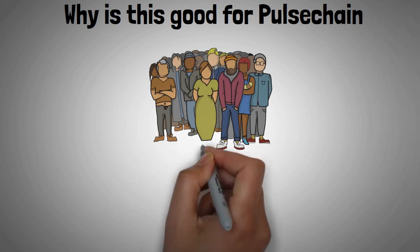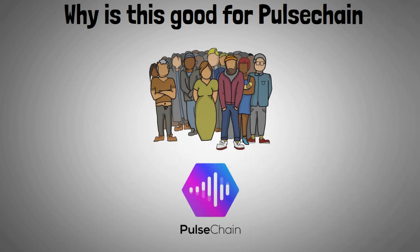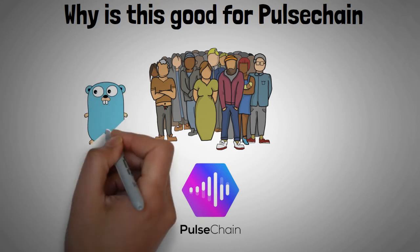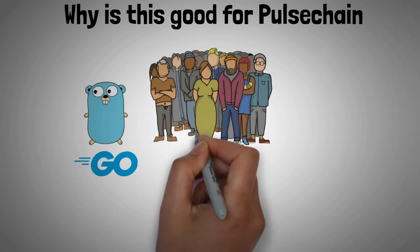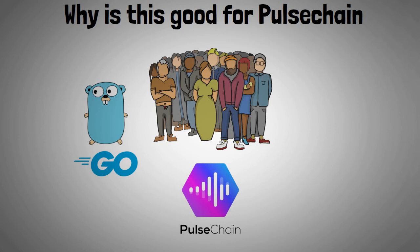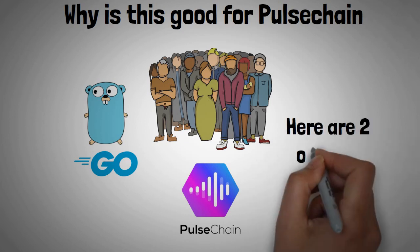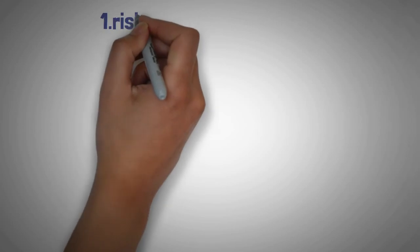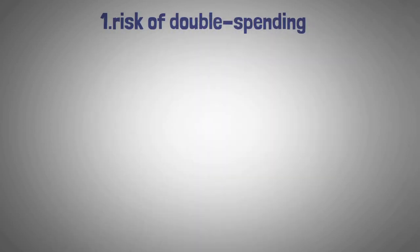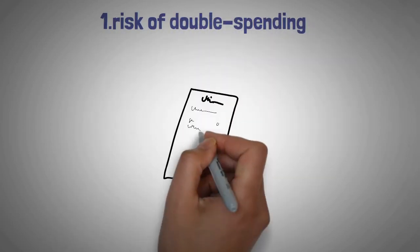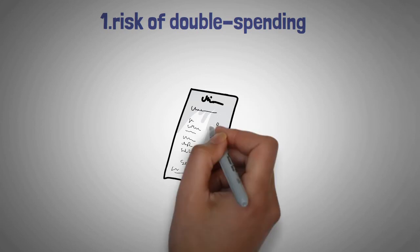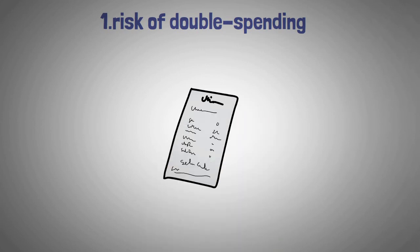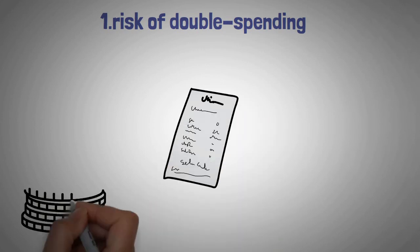Those are four reasons why Go can be great for PulseChain, but does this mean all will be well? Not quite. Golang is an excellent programming language, but there are still some eventualities and risks that come with it. The first is the risk of double spending. One of the main benefits of Golang is that it can carry out multiple transactions at the same time. However, this also means that there is a higher risk of double spending.